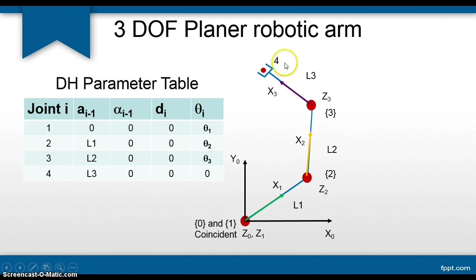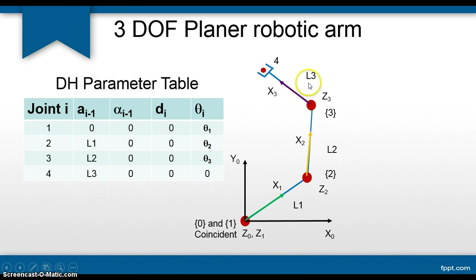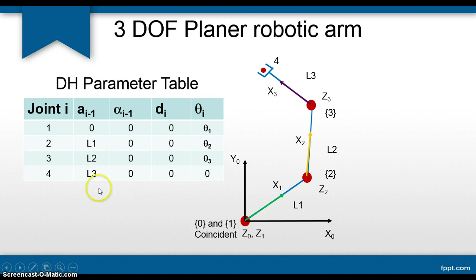Point number four is at the other end of the third link. It is not a coordinate system but only a point of interest whose location we want to know. We only translate from frame three to point four by distance l3. This distance l3 is along axis x3. As per our definition of link length, we assign link length l3 in the column of link length for point four. Since it is only a point, all other values are zero.